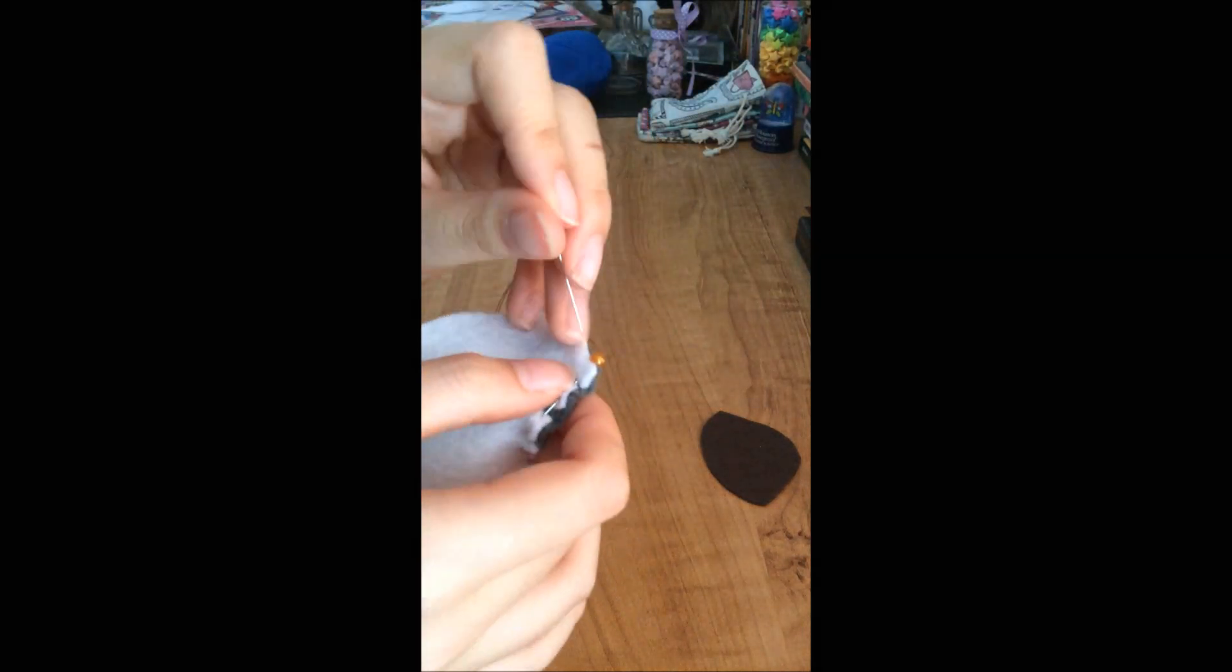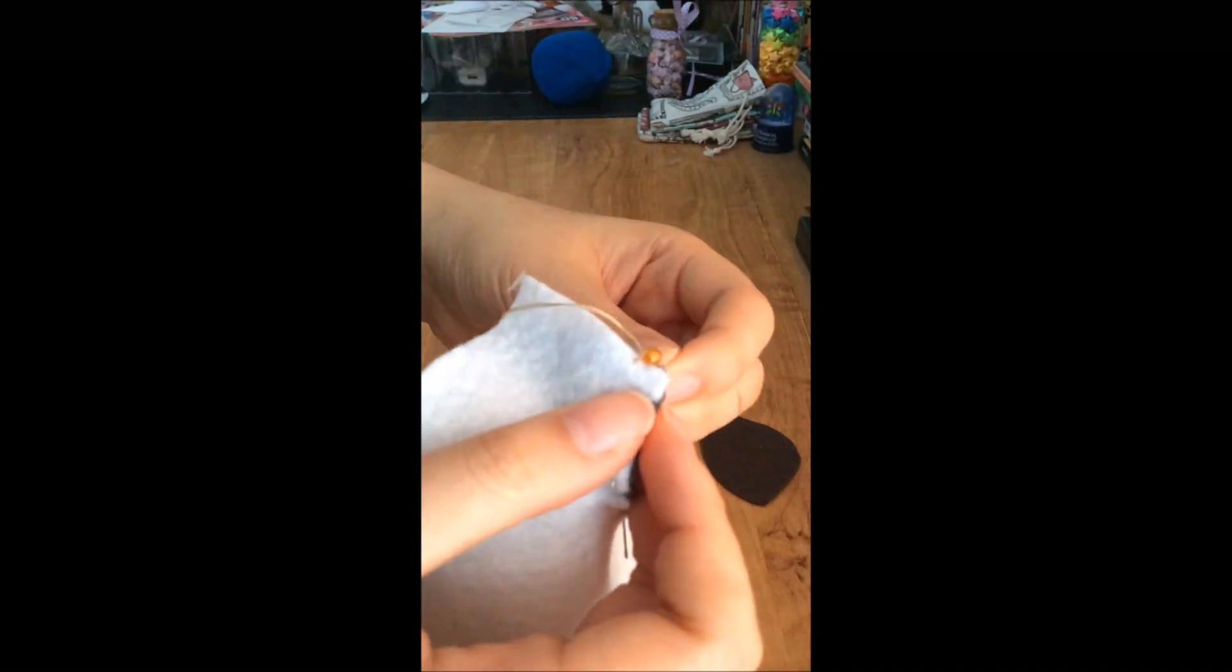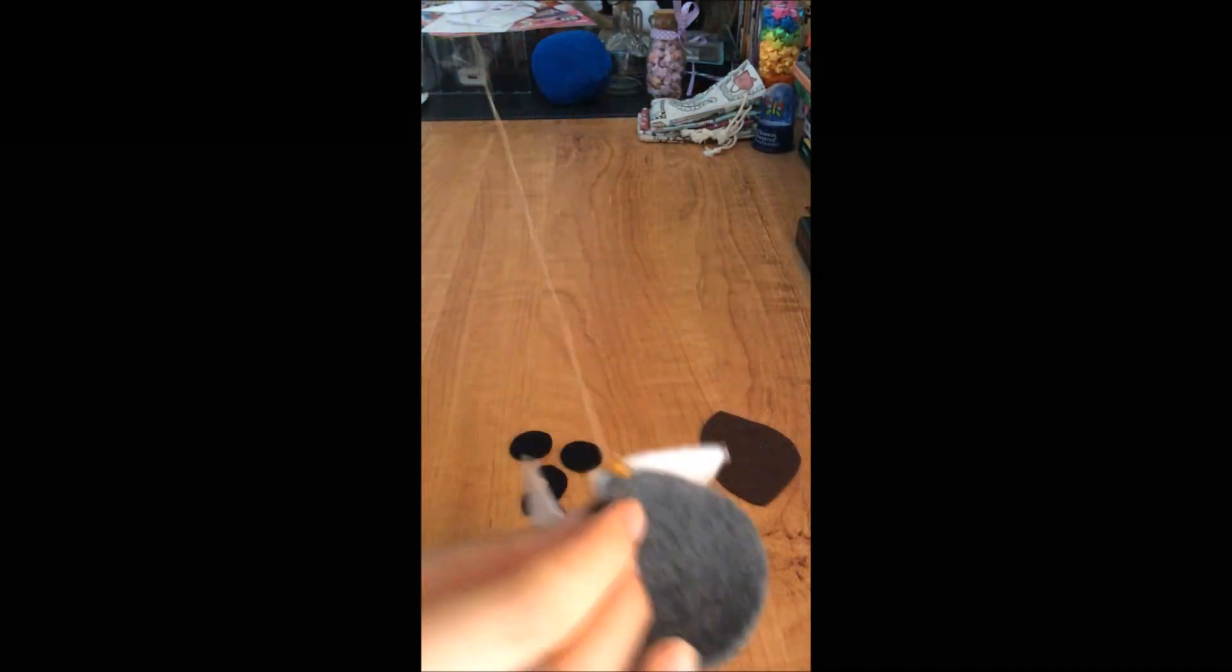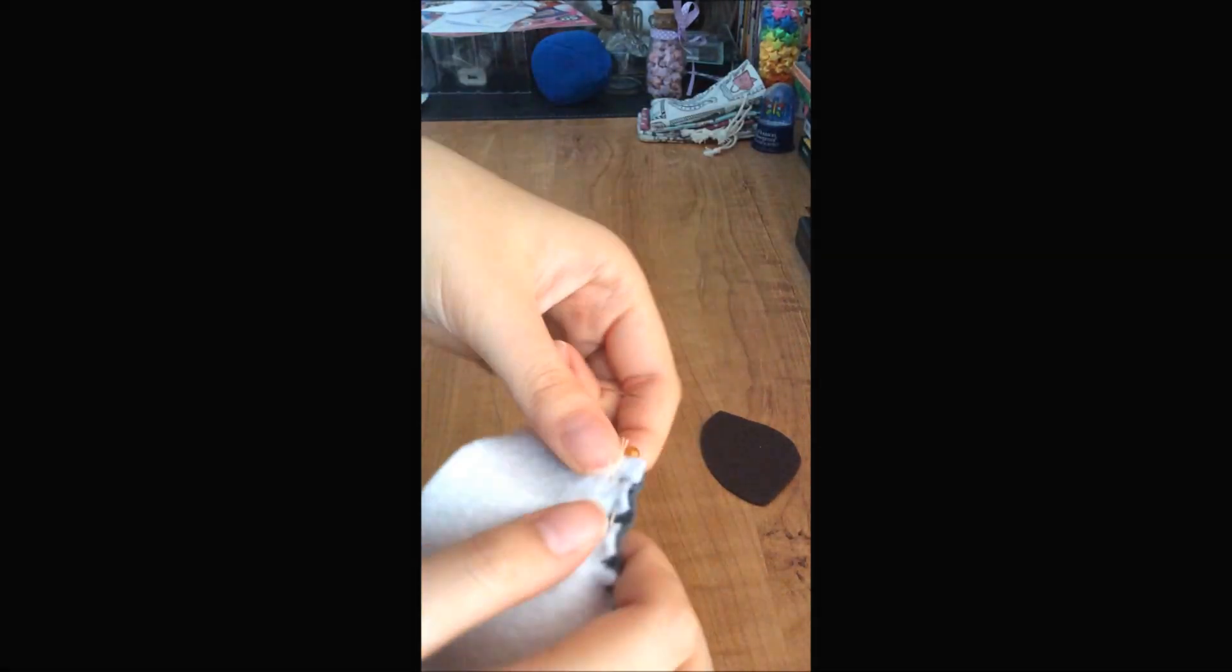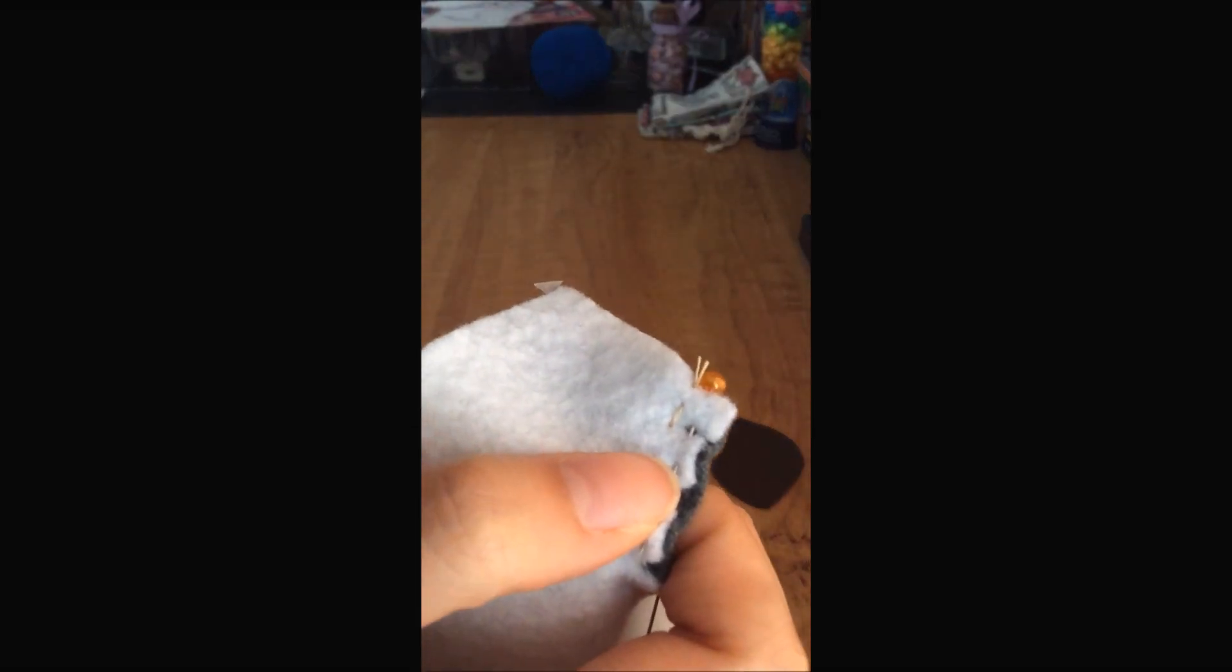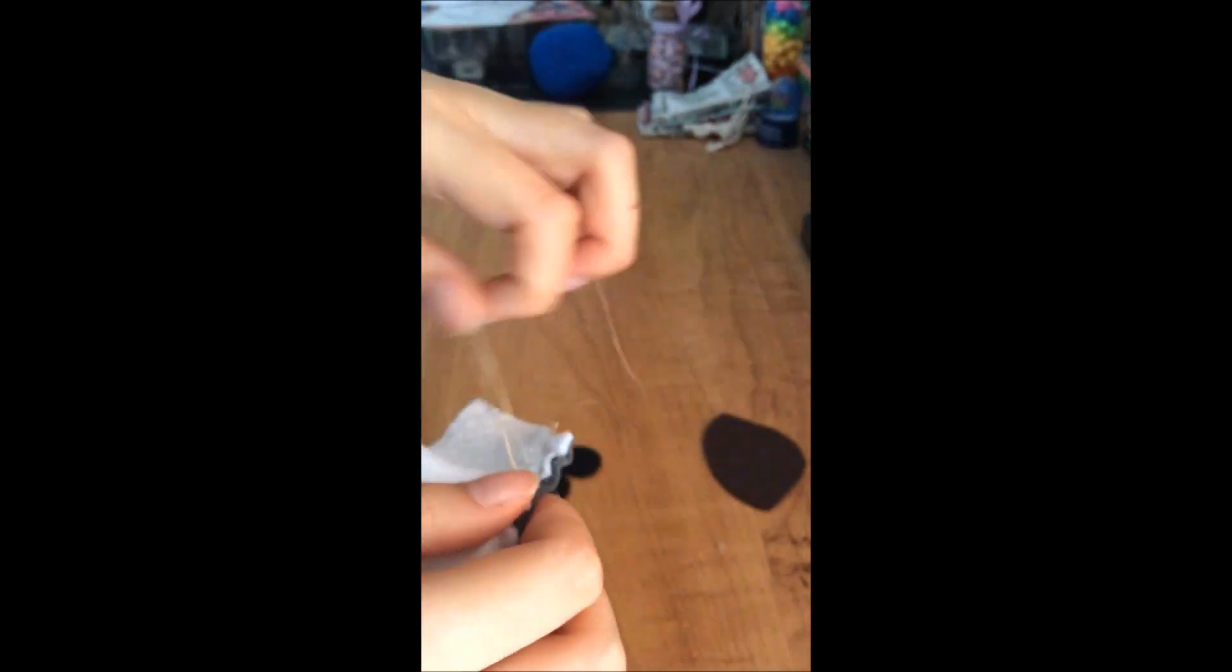Make sure the ear is on the outside of the body. You're just going to do a basic running stitch from side to side and then double back so just in case you missed any spots if you want to. Do this to the other side too.